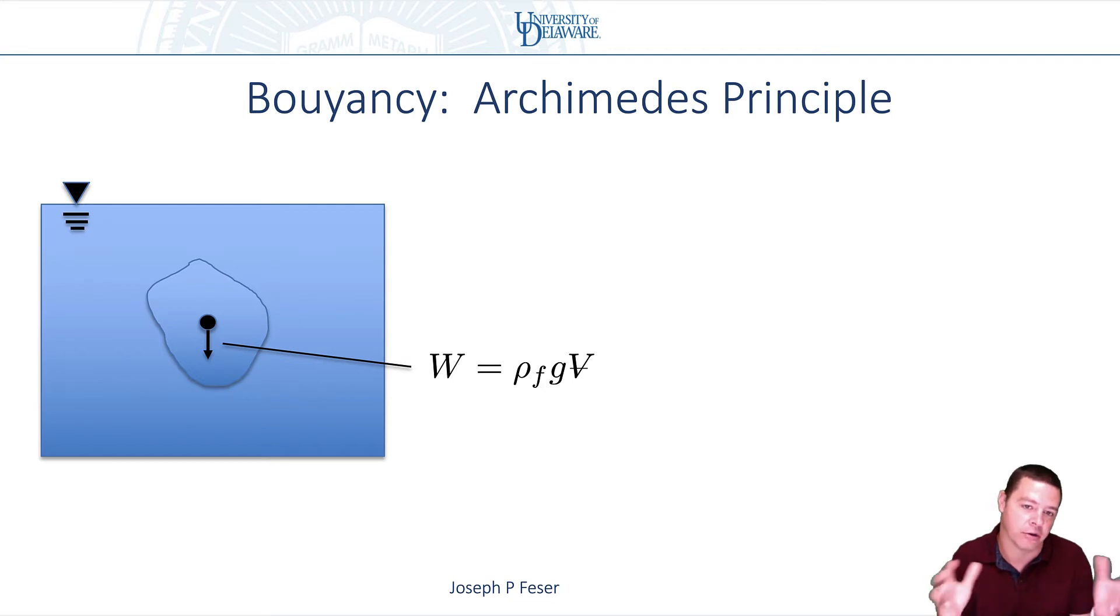And so you can calculate that the weight of that little region that we specified, whatever its shape, is the density of the fluid times the volume of the fluid times the gravitational constant. That's the weight of the fluid that's inside of our control volume.